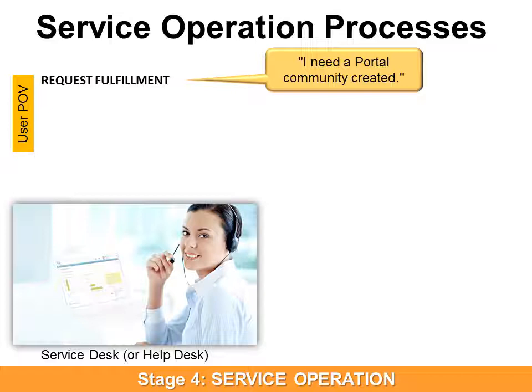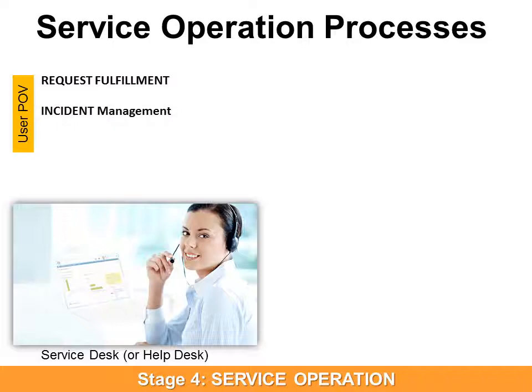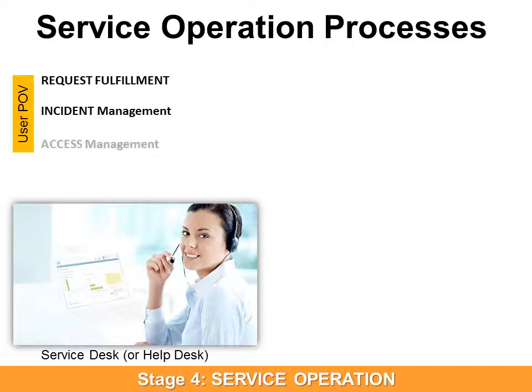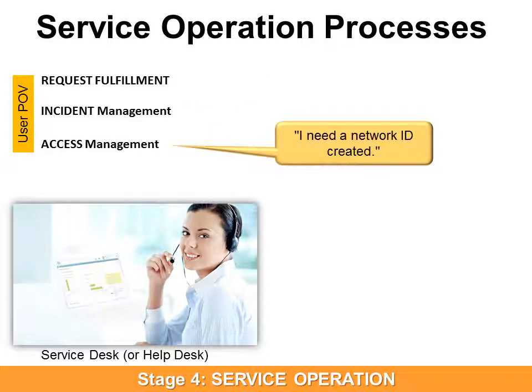For example, request fulfillment: the user says, 'I need a portal community created.' That would be a request for something. Incident management is when something isn't working right, and the user might say, 'I can't access the portal.' Access management is when they can't access something due to security limitations, so they might say, 'I need a network ID created.'